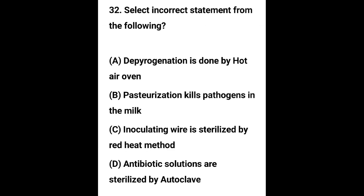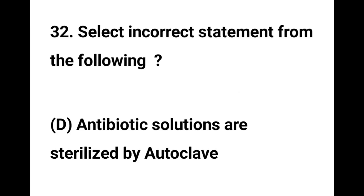Question number 32. Select the incorrect statement from the following: Option A - Depyrogenation is done by hot air oven. Option B - Pasteurization kills pathogens in milk. Option C - Inoculating wire is sterilized by red heat method. Option D - Antibiotic solutions are sterilized by autoclave. The correct answer is Option D. Antibiotic solutions are sterilized by autoclave is an incorrect statement.